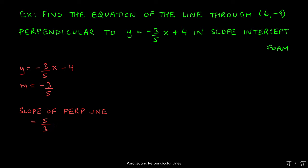So what this question really turns into then is find the equation of the line that passes through (6, -9) with a slope of 5/3.